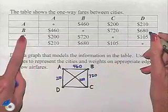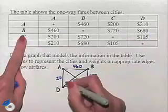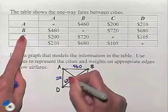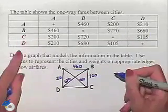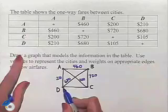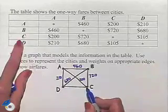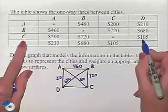B to D is 680. It's going to be this diagonal. And notice we only have one edge left that we need to take care of and that's from D to C and that would be $105.